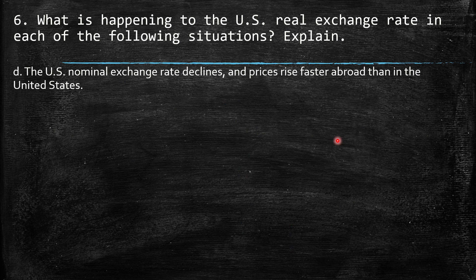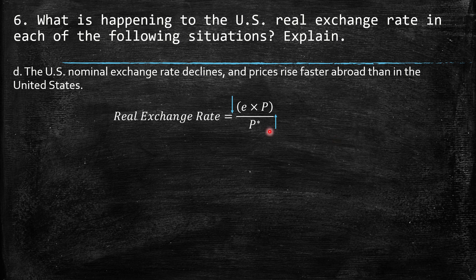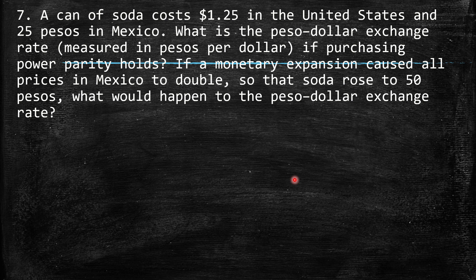Part D: the US nominal exchange rate declines and prices rise faster abroad than in the United States. We have E decreasing and foreign prices increasing — both effects push the real exchange rate down, so as a consequence we have a decrease in the real exchange rate.